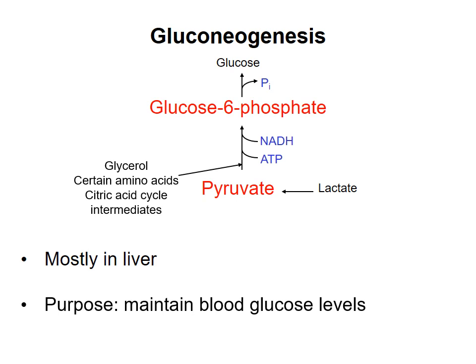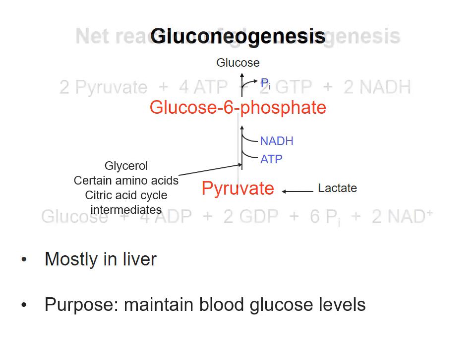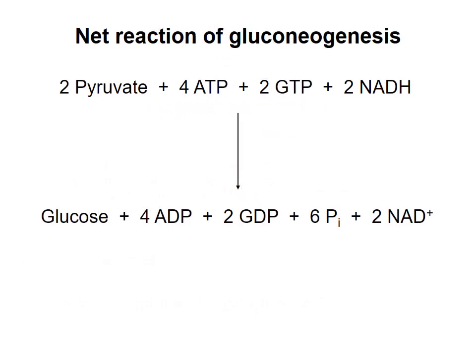The answer is that gluconeogenesis is not simply the reverse of glycolysis, as we can see when we look at the net reaction of the pathway. When two pyruvate molecules are converted to a glucose molecule, energy from hydrolysis of four ATP and two GTP is required. It is the energy from these six ATP equivalents that makes the process energetically favorable. And because gluconeogenesis is a reductive process, we need a source of electrons, and the electrons come from NADH. You should know this net reaction for the test.